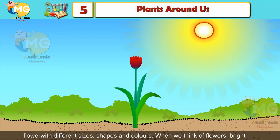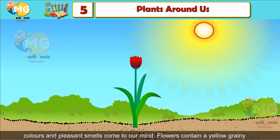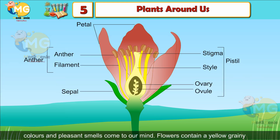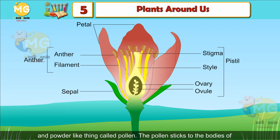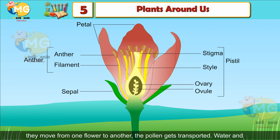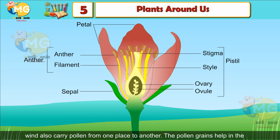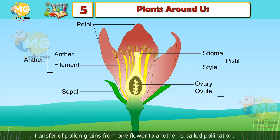A flower is the most attractive part of a plant. There are different kinds of flowers with different shapes, sizes, and colors. Flowers contain a yellow, grainy, powder-like substance called pollen. Pollen sticks to the bodies of butterflies, moths, wasps, bees, and birds that visit flowers to suck nectar. As they move from one flower to another, the pollen gets transported. Water and wind also carry pollen. The transfer of pollen grains from one flower to another is called pollination.